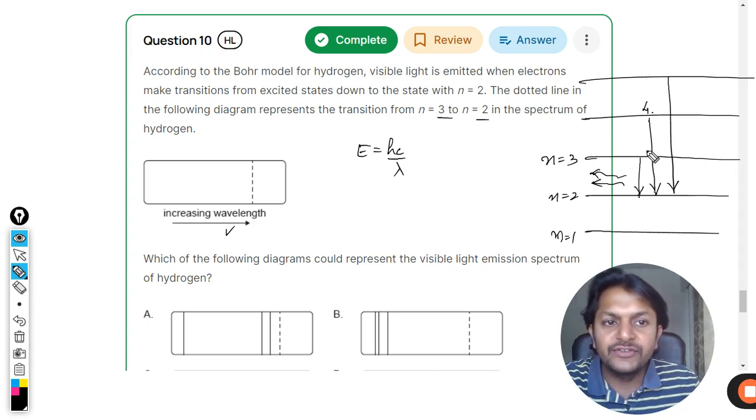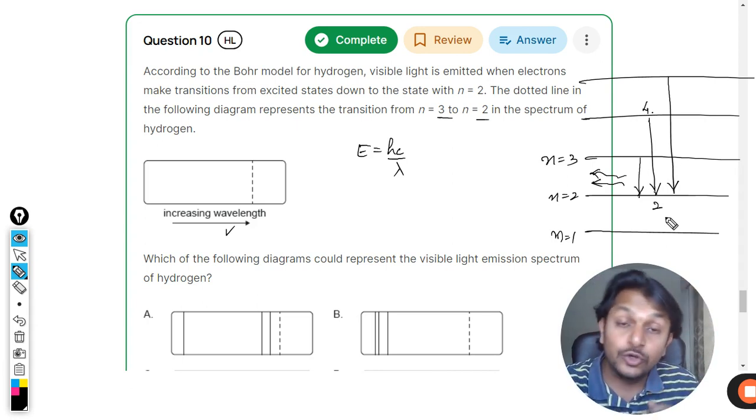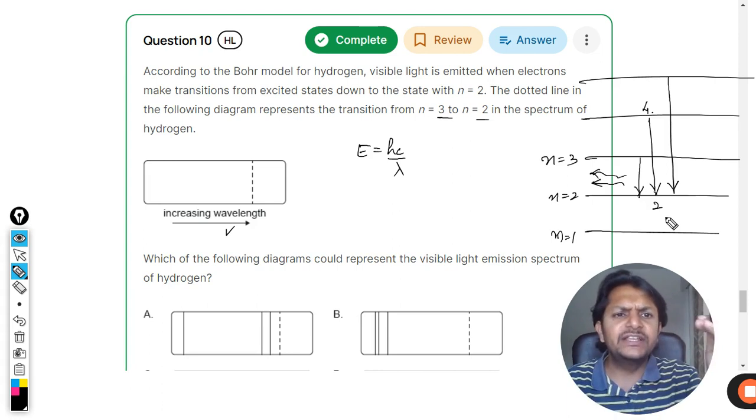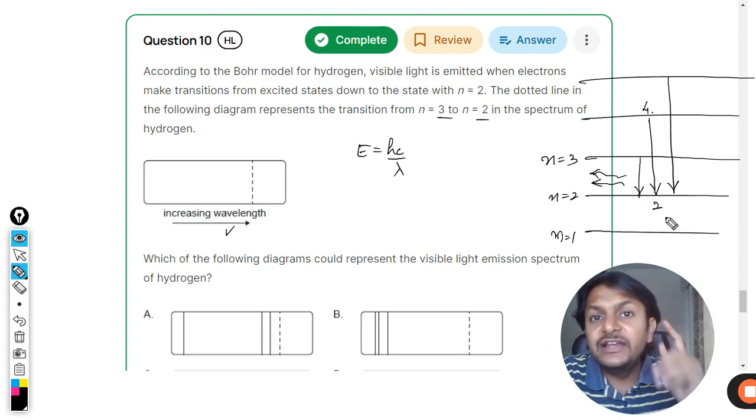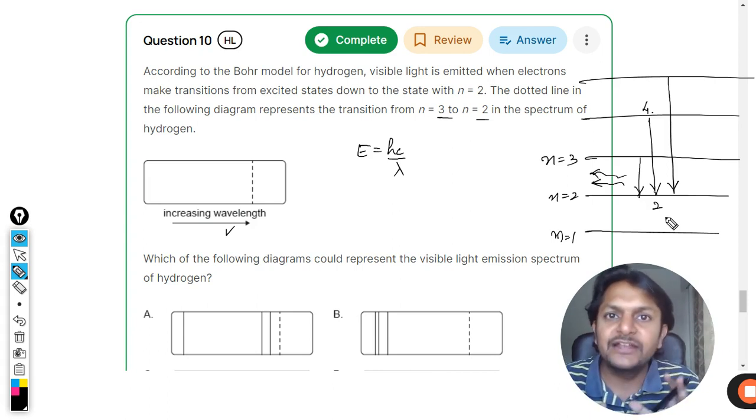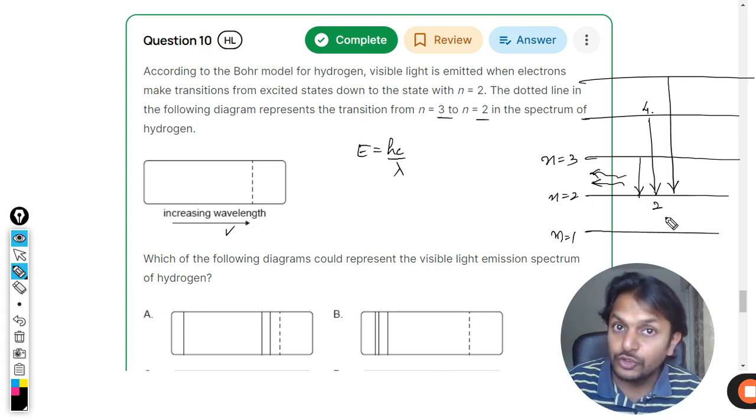Let's say there's an electron making a transition from four to two. Clearly the energy gap has increased, so the photon will have more energy. When the electron makes a transition, it releases only one packet of energy.